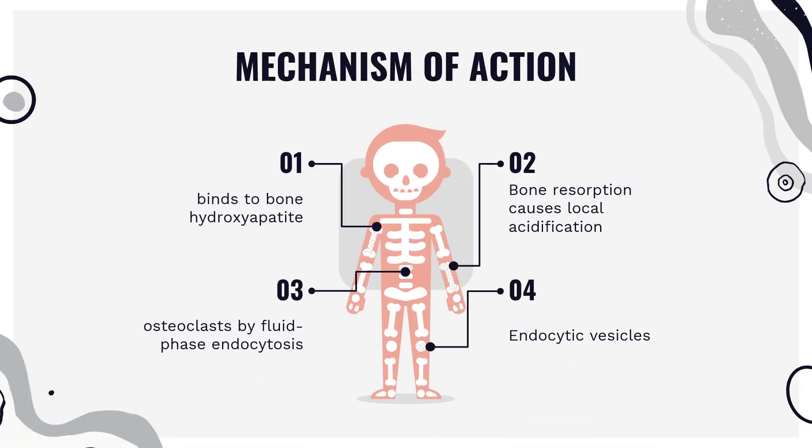Mechanism of Action: Risedronic acid binds to bone hydroxyapatite. Bone resorption causes local acidification, releasing risedronic acid, which is taken into osteoclasts by fluid phase endocytosis. Endocytic vesicles are acidified, releasing risedronic acid to the cytosol of osteoclasts, where it induces apoptosis through inhibition of farnesyl pyrophosphate synthase. Inhibition of osteoclasts results in decreased bone resorption.